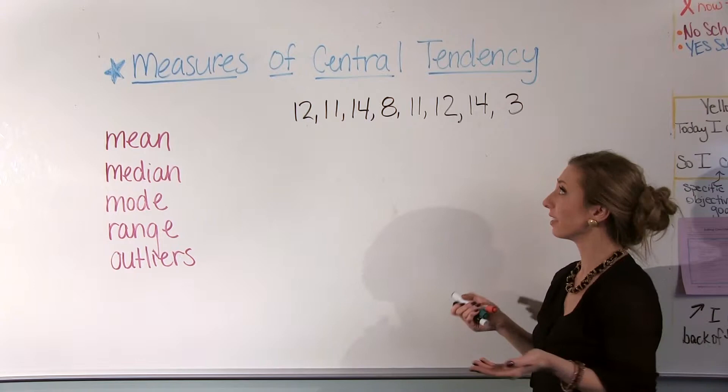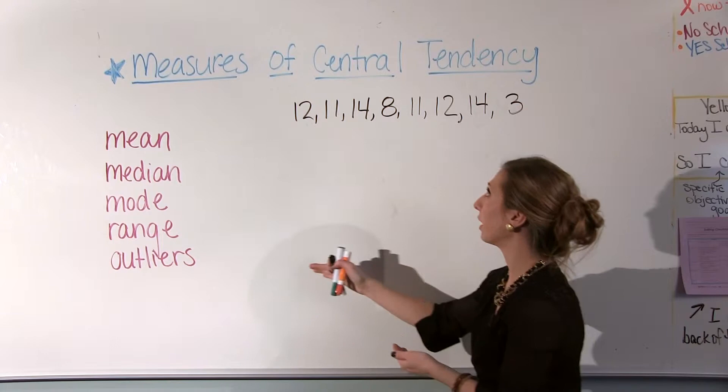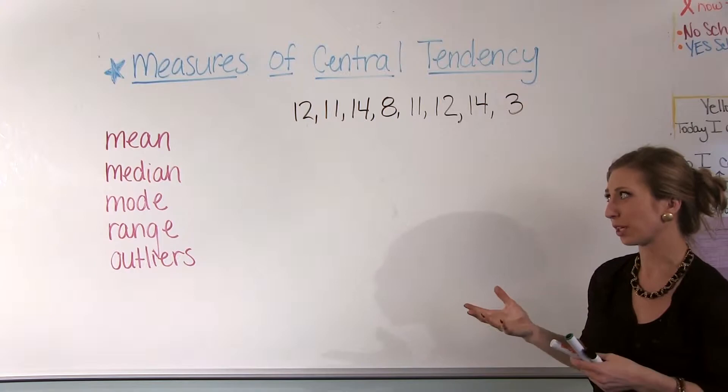Welcome to Back to Basics. Today we're going to learn about measures of central tendency. Central tendency kind of sounds complicated, but all that is is finding the mean, median, mode, range, and maybe some outliers when it comes to a set of data. This is a middle school concept that sometimes is really confusing.